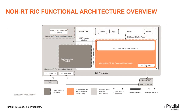Looking at the high-level non-RT RIC functional architecture, in addition to the A1 interface there is also an internal R1 interface. The non-RT RIC allows applications called R-Apps to run on it — R stands for RAN, reflecting the RAN management domain that SMO is responsible for. The non-RT RIC exposes SMO framework functions to R-Apps via a set of R-App service exposure functions over the R1 interface.